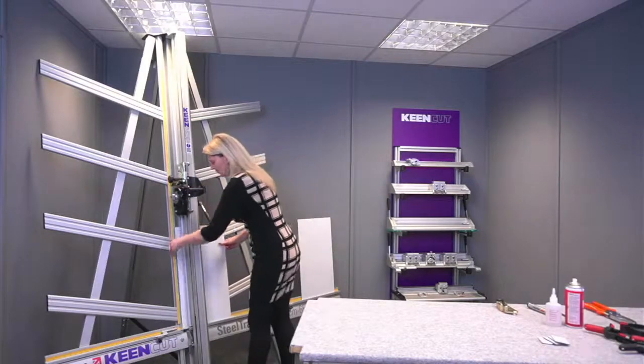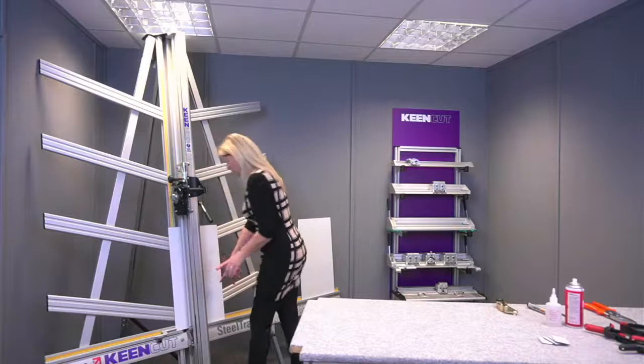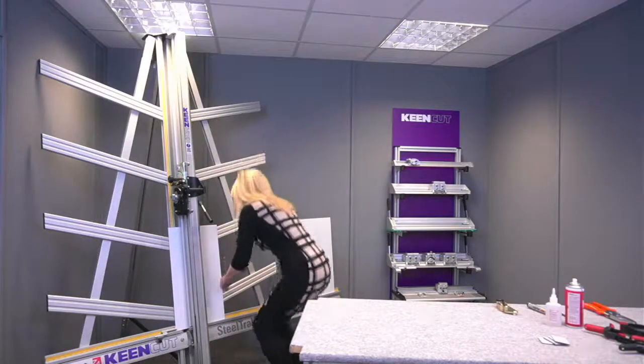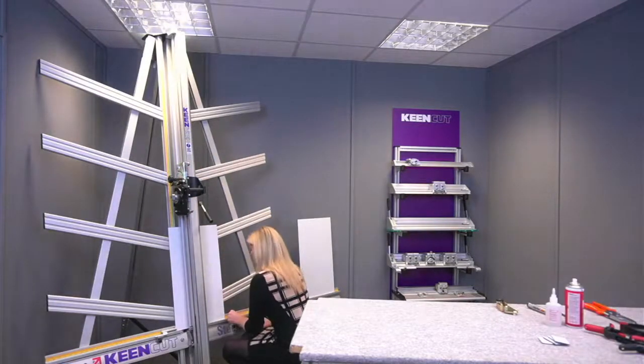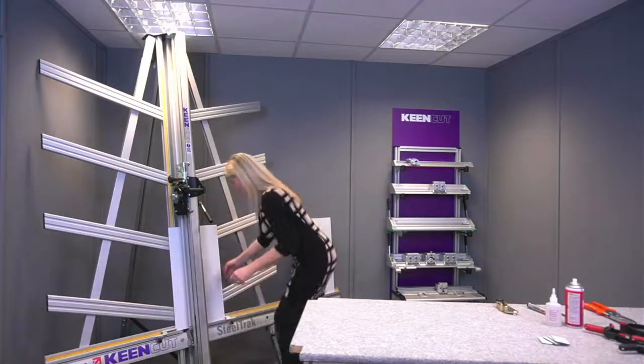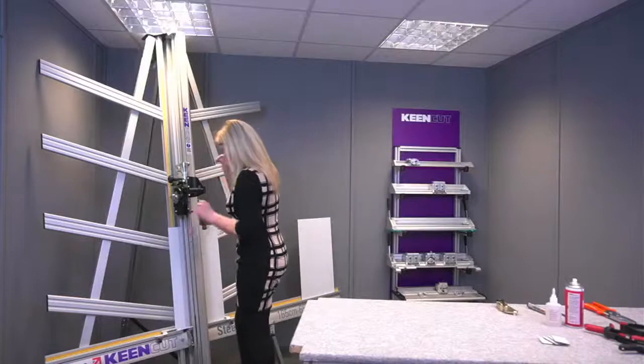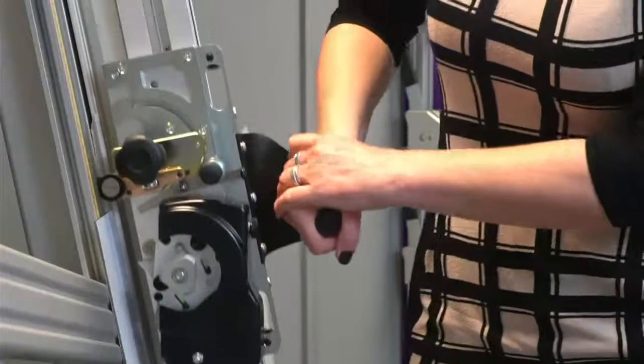So I'm placing my board, my ACP behind the clamp making sure it's flat on the squaring arm. I'm going to take the production stop on the right hand side and firmly push it up against the board so my board is not moving side to side. I can now clamp my board in place and start to V-groove.